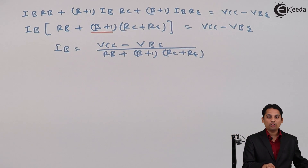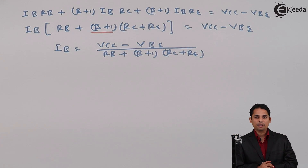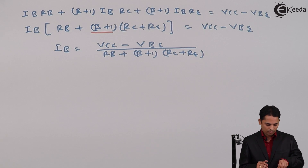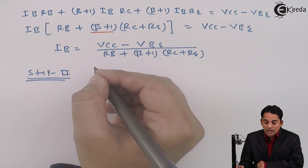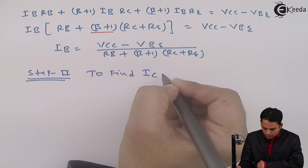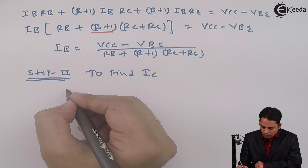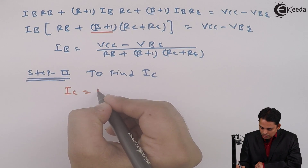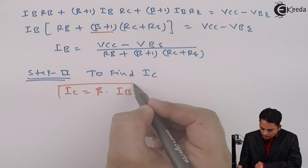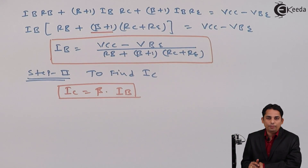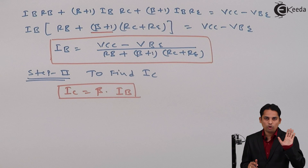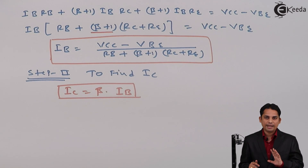This is the equation for IB obtained from Step 1. For Step 2, we find IC. We know that IC is equal to beta times IB, so by multiplying IB by beta we get the collector current IC, which is our first Q-point.